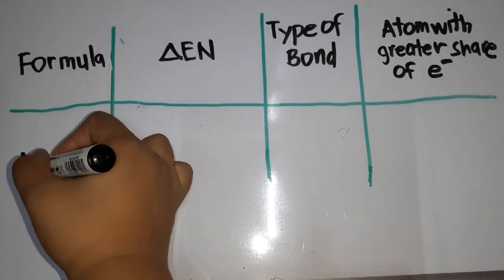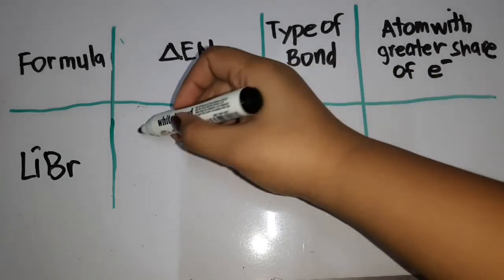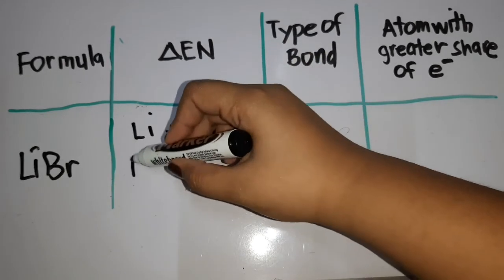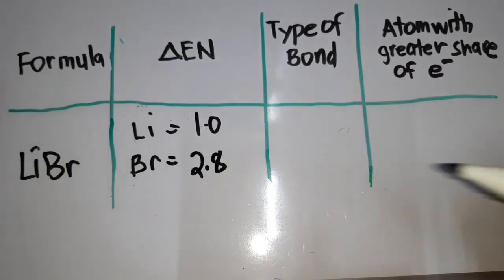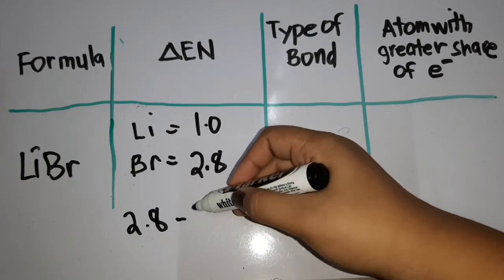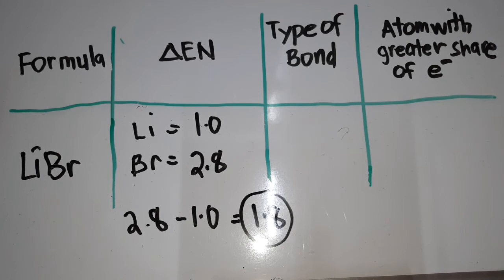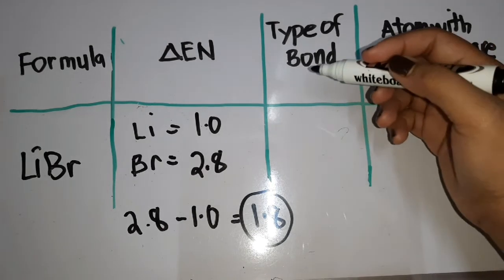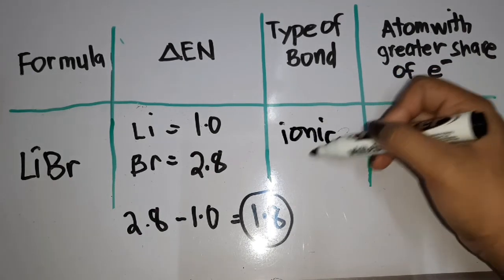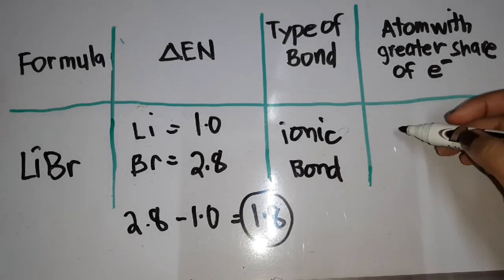For another example, we have lithium and bromine (LiBr). Find the electronegativity from the periodic table: lithium is 1.0 and bromine is 2.8. For the solution, write the greater value first: 2.8 minus 1.0 equals 1.8. Since 1.8 is greater than 1.7, the type of bond is ionic bond, and the atom with the greater share of electrons is bromine.